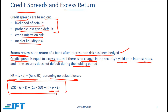For S and delta S we can use percentages, and this gives the overall excess return in percent. If you are comparing two bonds A and B, the bond with the higher expected excess return would be preferred.